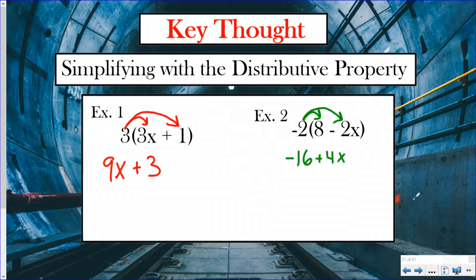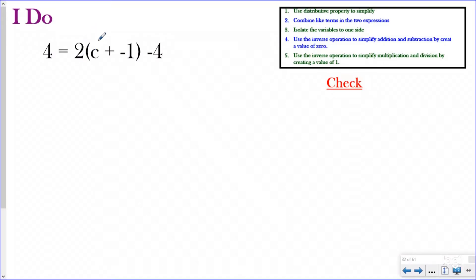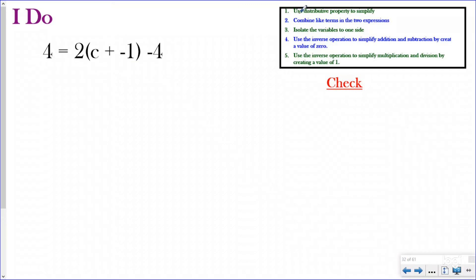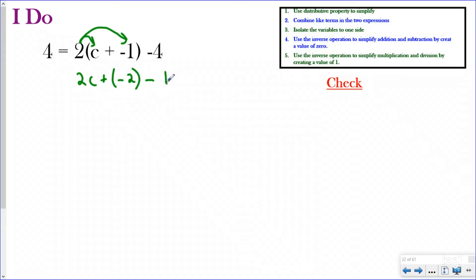Let's look at what an actual equation looks like with this added as a step. Here I have four equals two times the quantity (c plus negative one) minus four. This is a balanced equation, so there should be a solution that makes both expressions equal. Step one: use the distributive property. I distribute the two: two times c is 2c, and two times negative one is negative two. So now I have 4 = 2c minus two minus four. Next, I combine like terms — negative two and negative four combine to make negative six.